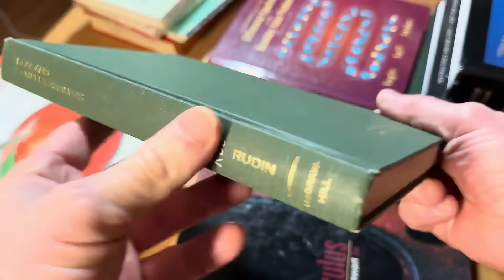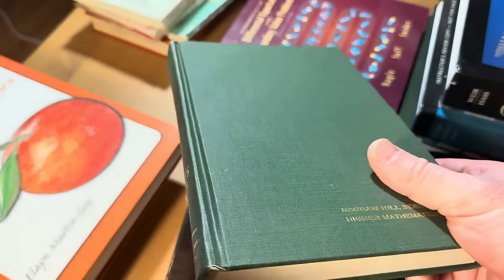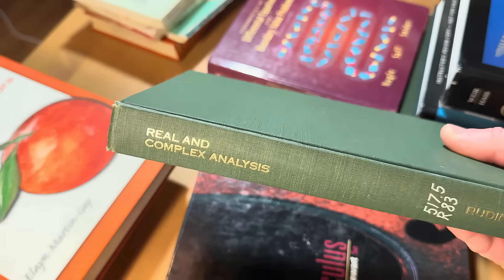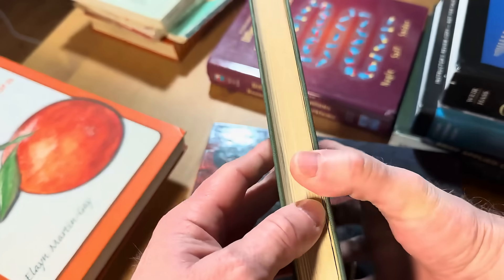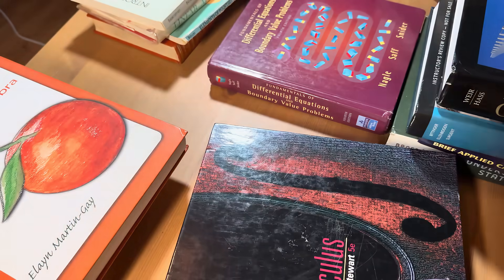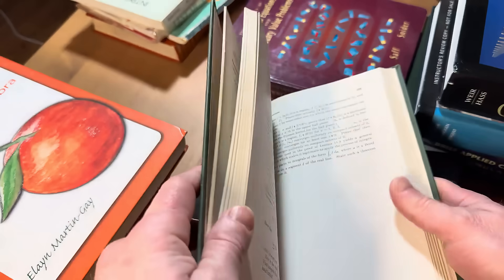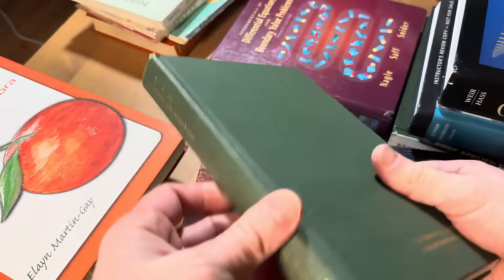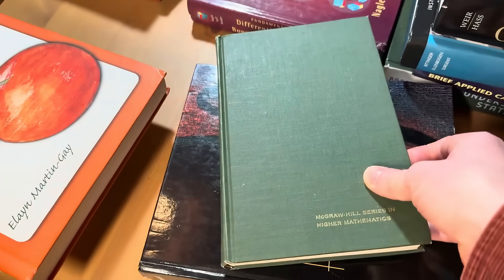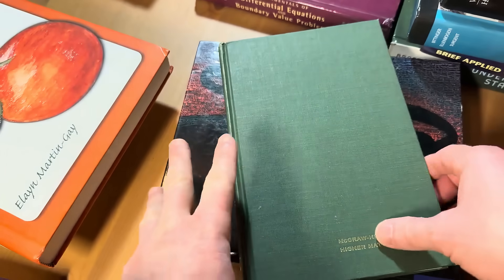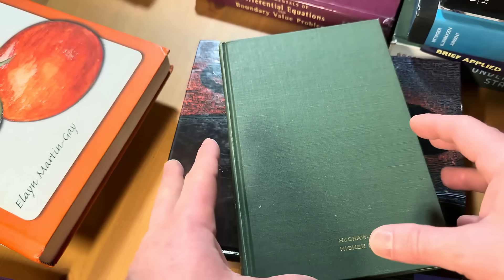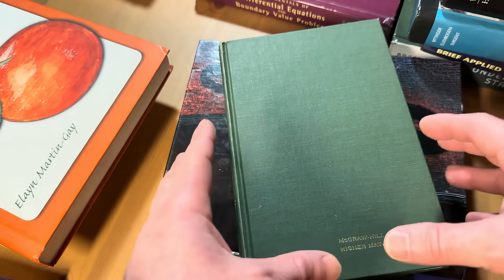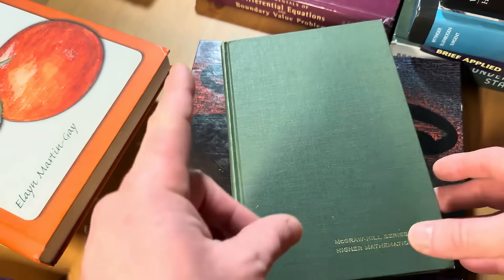Real and complex analysis. So this is a book that is used by first-year graduate students in mathematics. Typically they'll take two semesters with a book like this. This book is notoriously difficult. I'm just gonna give it a whiff here. It smells amazing. This copy smells incredible. Let's take a closer look inside this book. Maybe read some of the mathematics. You're gonna see how it starts and I think you're gonna be shocked and surprised at how challenging it is and how concise and to the point it is.